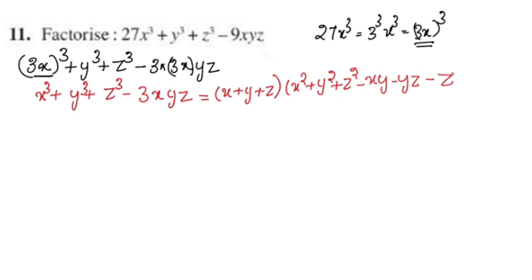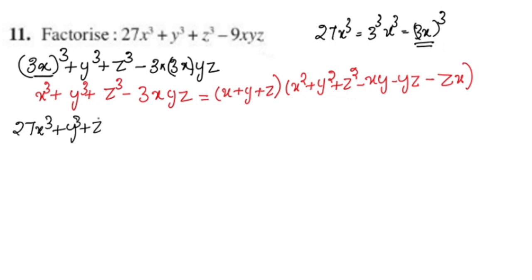This is our identity. You can learn the identity. Let's do the problem here. The question is: 27x³ + y³ + z³ - 9xyz. Let's apply the formula.